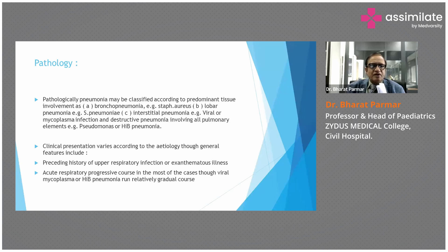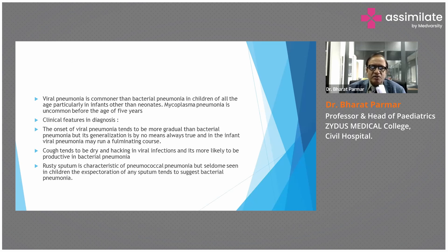Clinical presentation varies according to the etiology, though the general features include a preceding history of upper respiratory infection or exanthematous illness associated with viral pneumonia. Acute respiratory progressive course in most cases, though viral, mycoplasma, or Haemophilus pneumonia runs a relatively gradual course. Viral pneumonia is commoner than bacterial pneumonia in children of all ages, particularly in infants other than neonates. Mycoplasma pneumonia is uncommon before the age of five years.